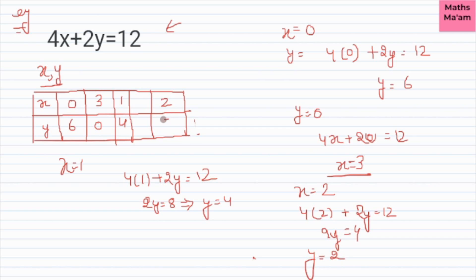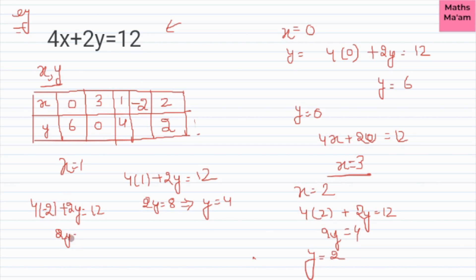We keep building this table with more values. For example, if x equals minus 2, then 4 times minus 2 plus 2y equals 12, so 2y equals 20, giving y equals 10. Like this, we can put any number of values into the table.